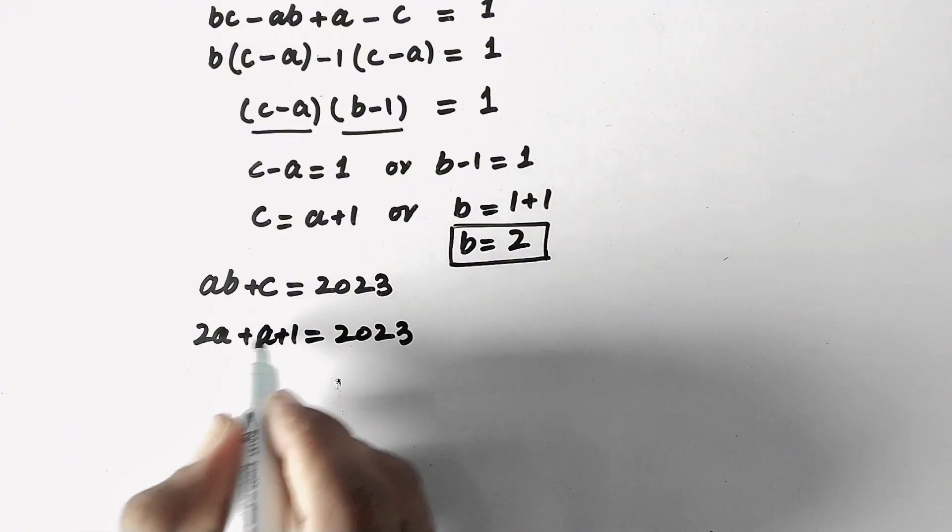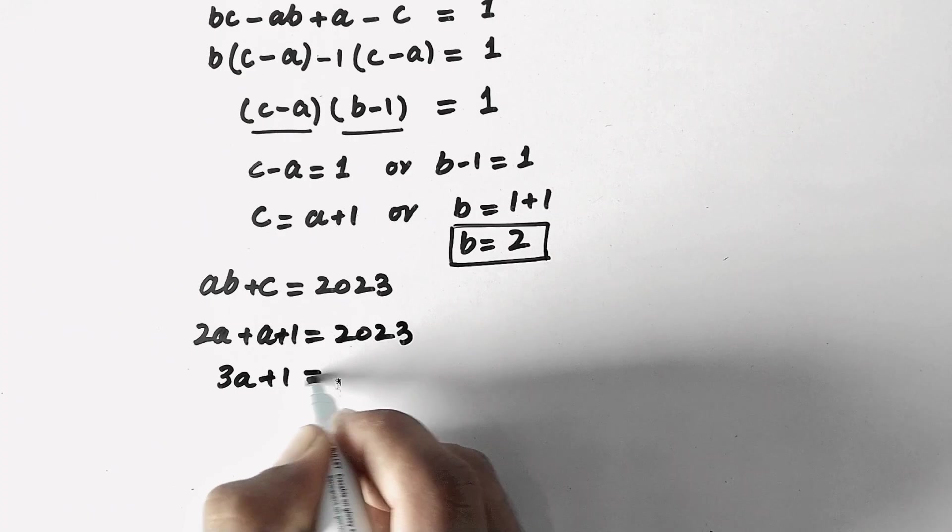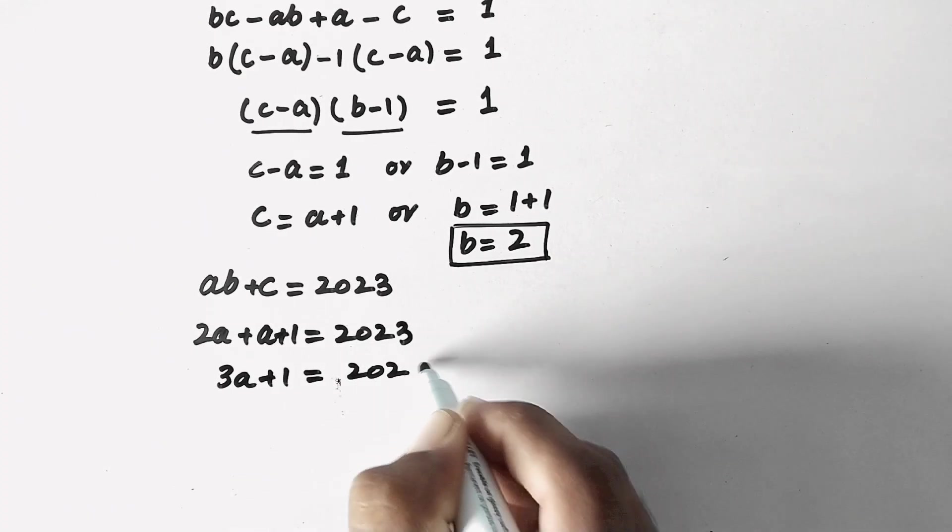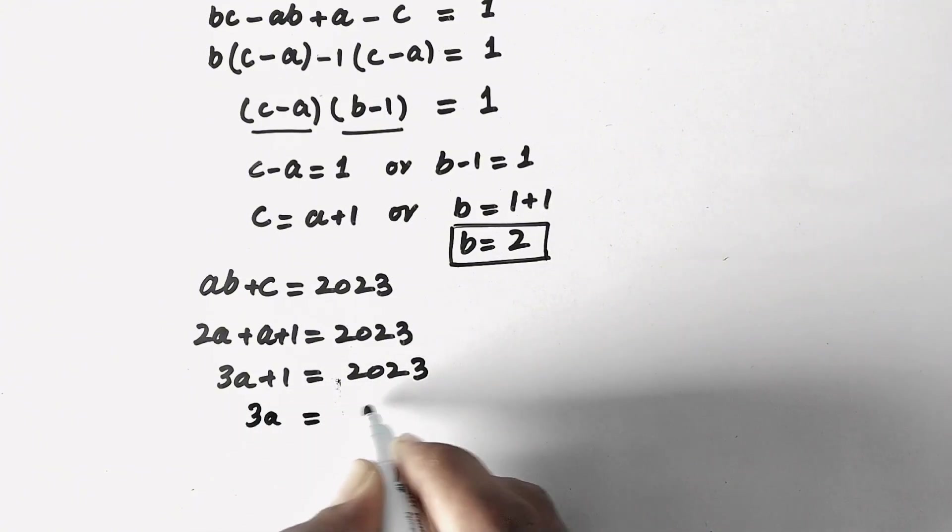So here 2A plus 1A will be 3A plus 1 equals 2023, or 3A will be equal to 2022.